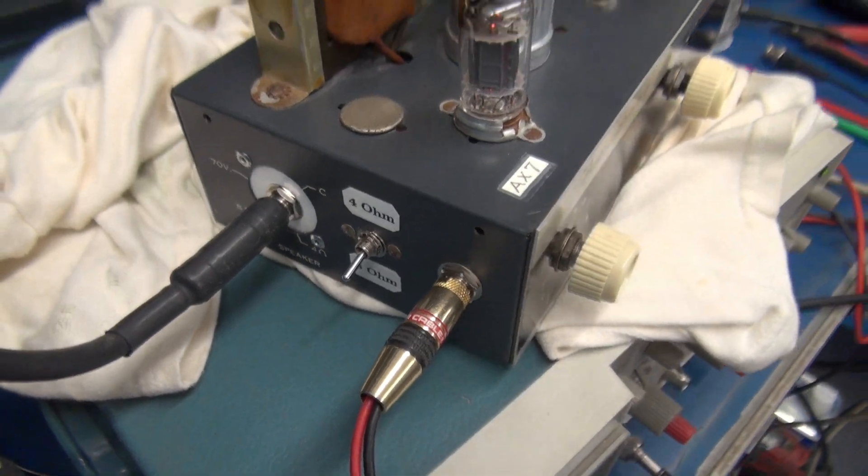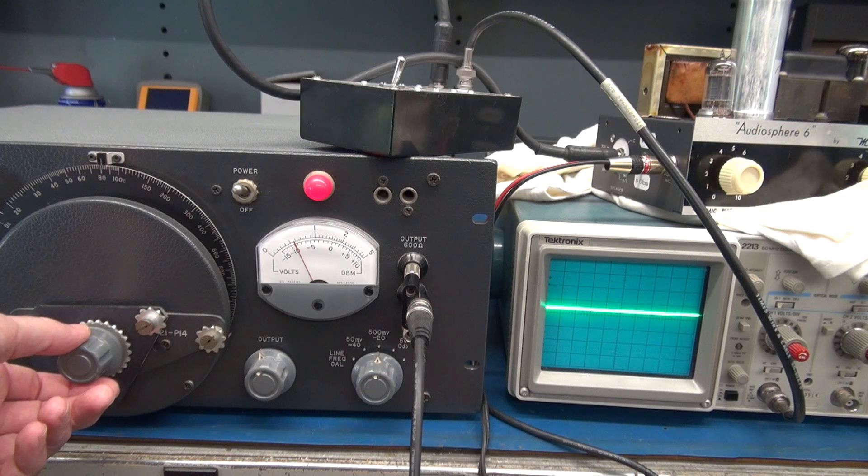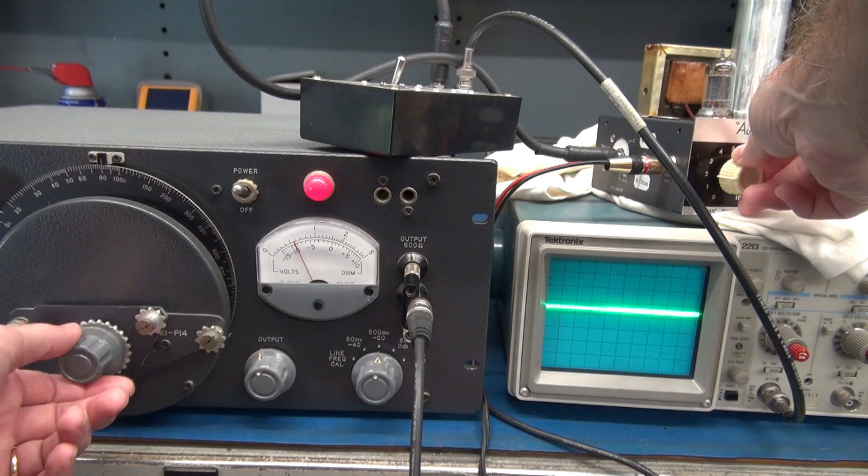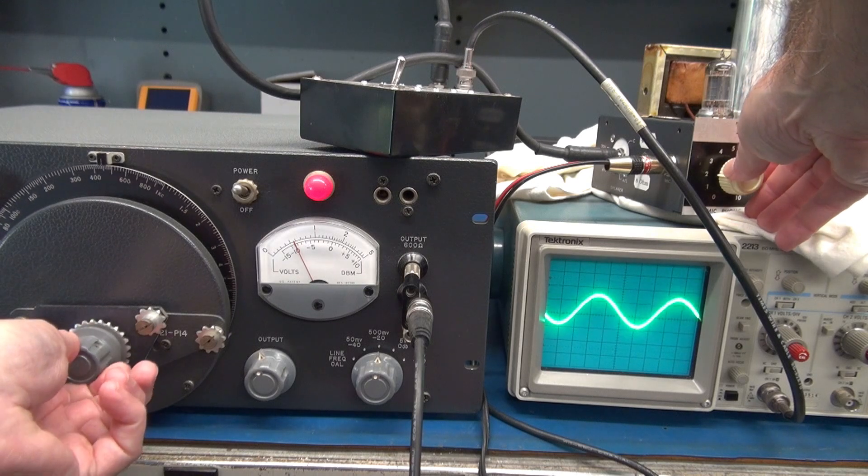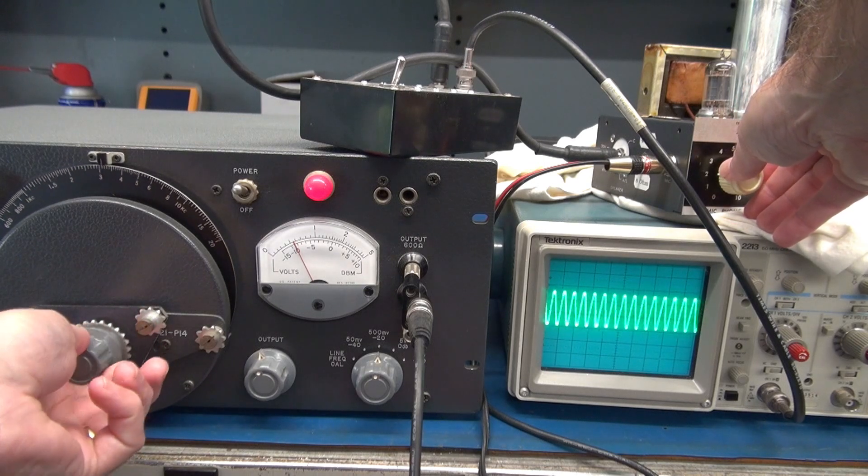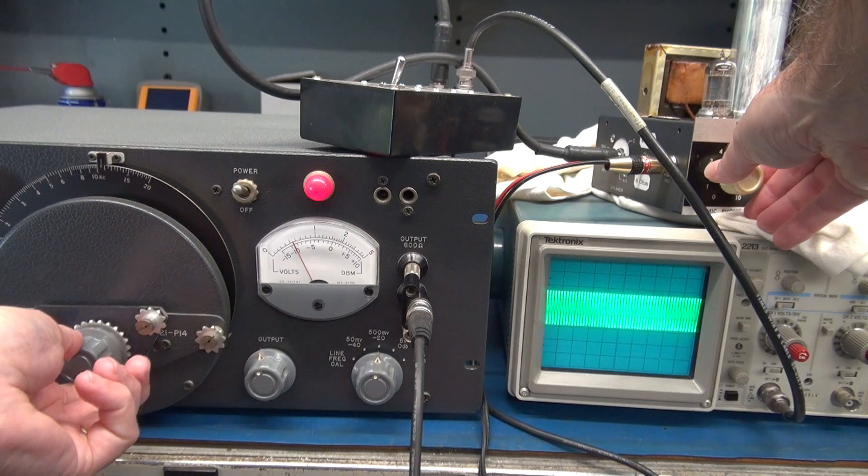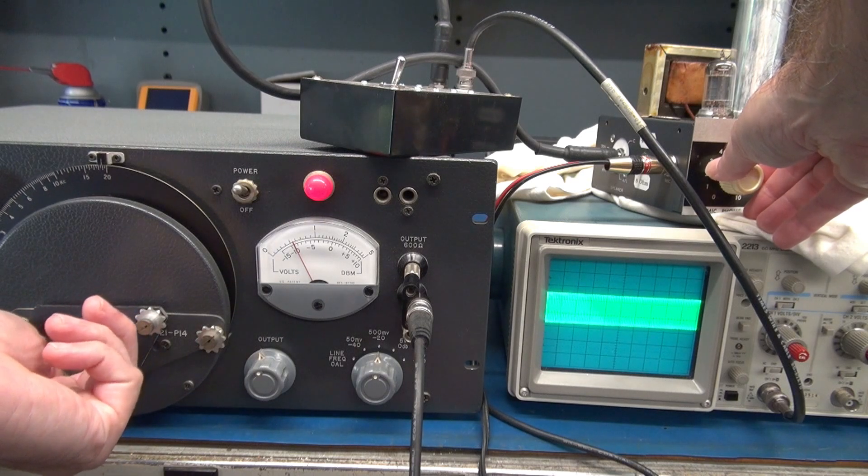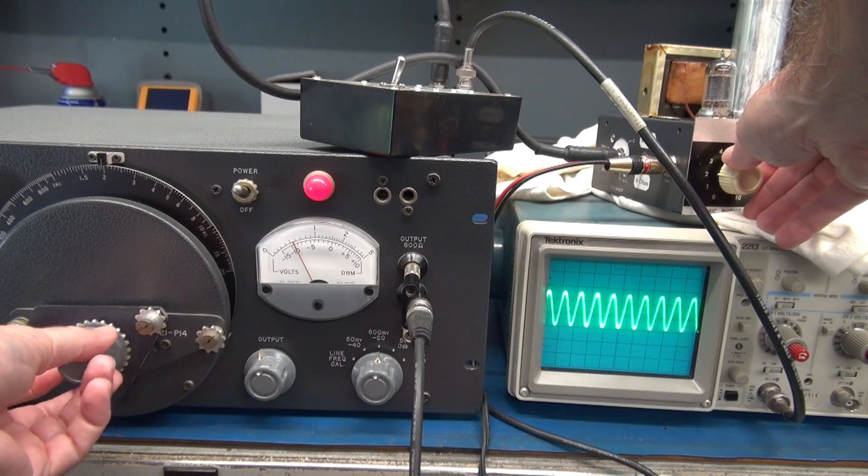All right, now I'm going to perform a frequency sweep using my General Radio 1504B. We're still in the dummy load and monitoring the output with the scope. Here we go, it's 200 hertz. Approaching 10 KC, you can see the amplitude starts to fall off. So the amp has great frequency response.